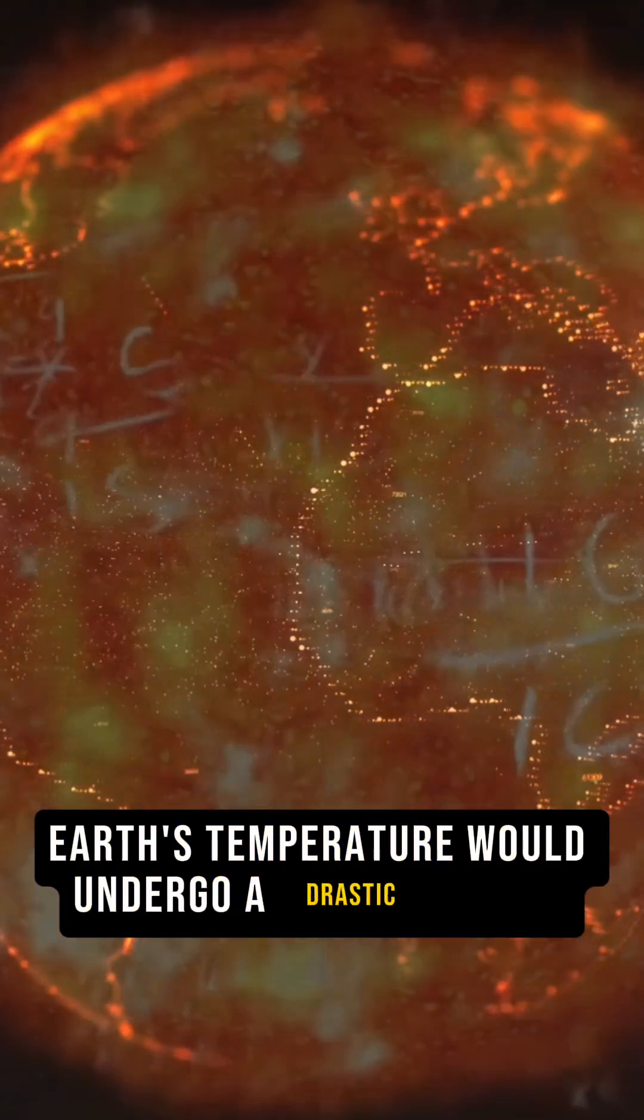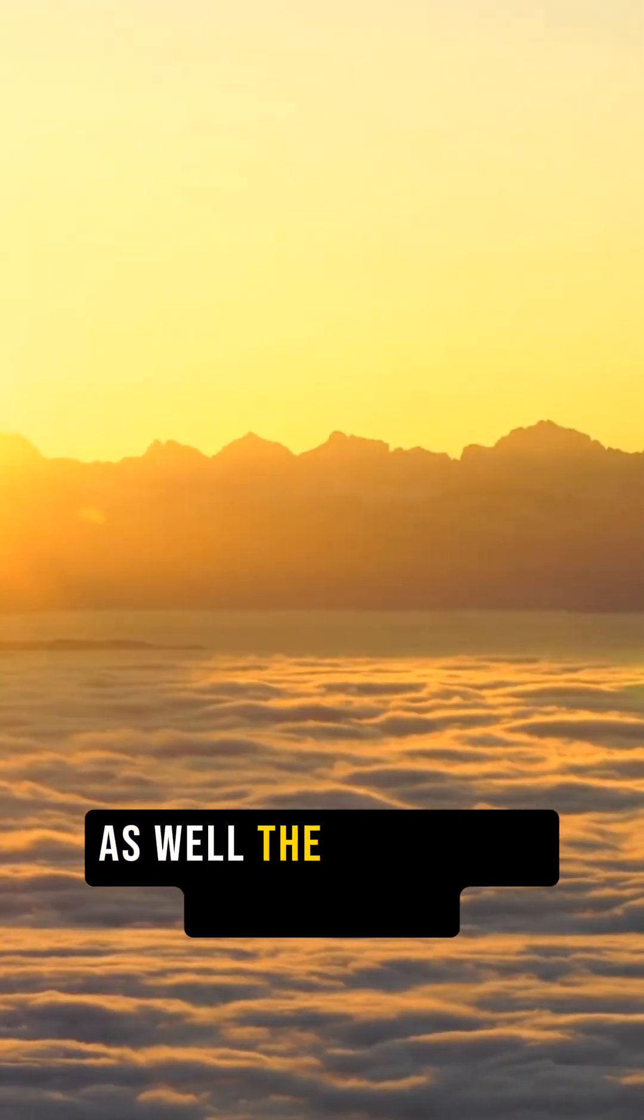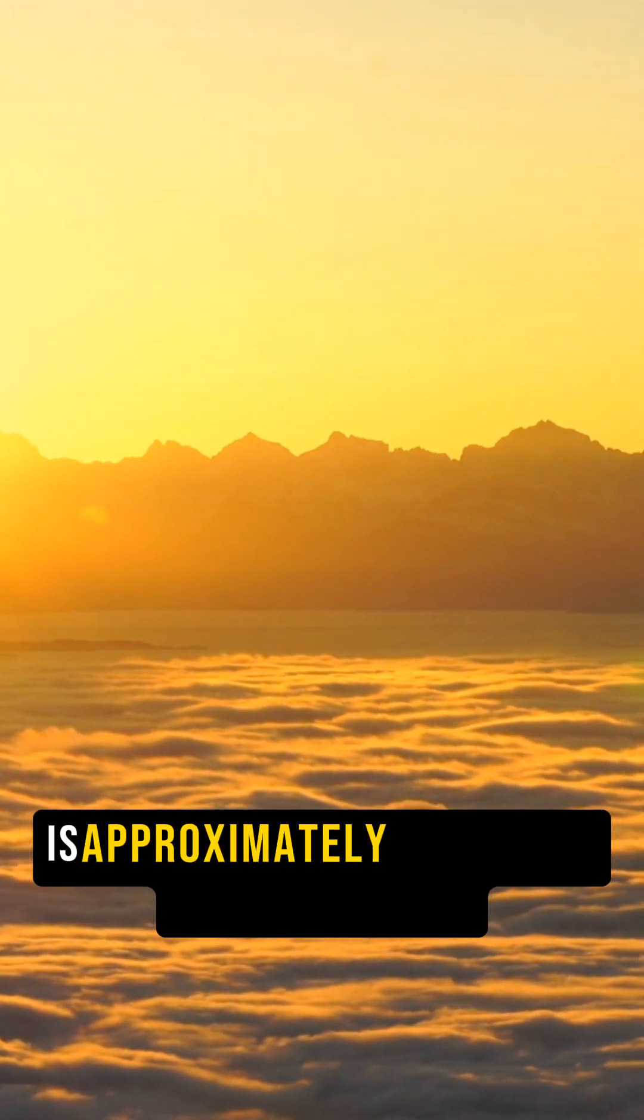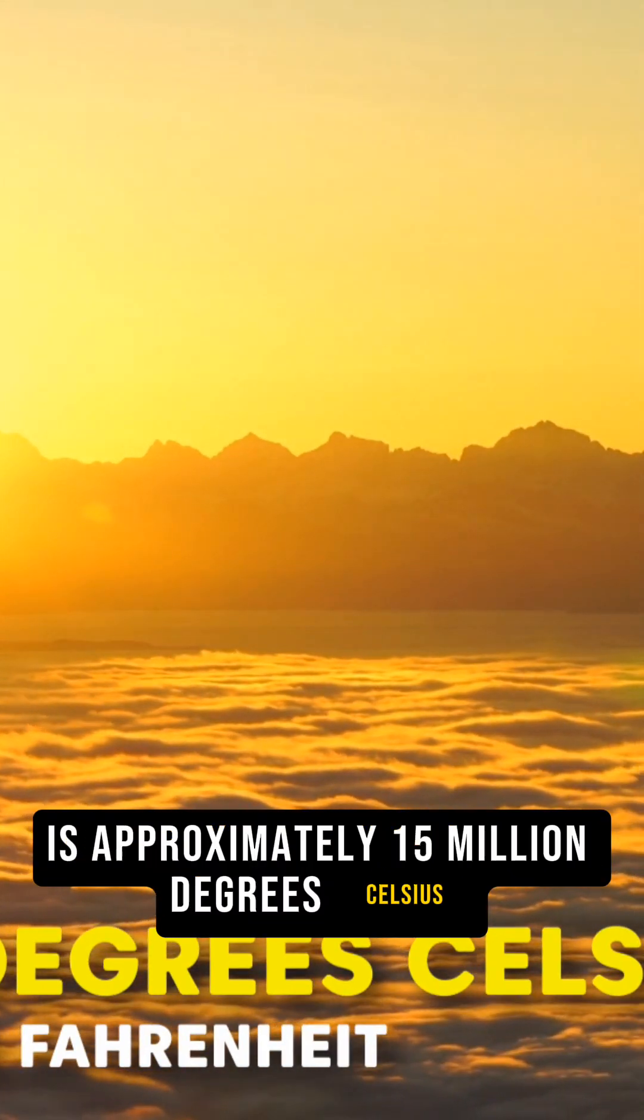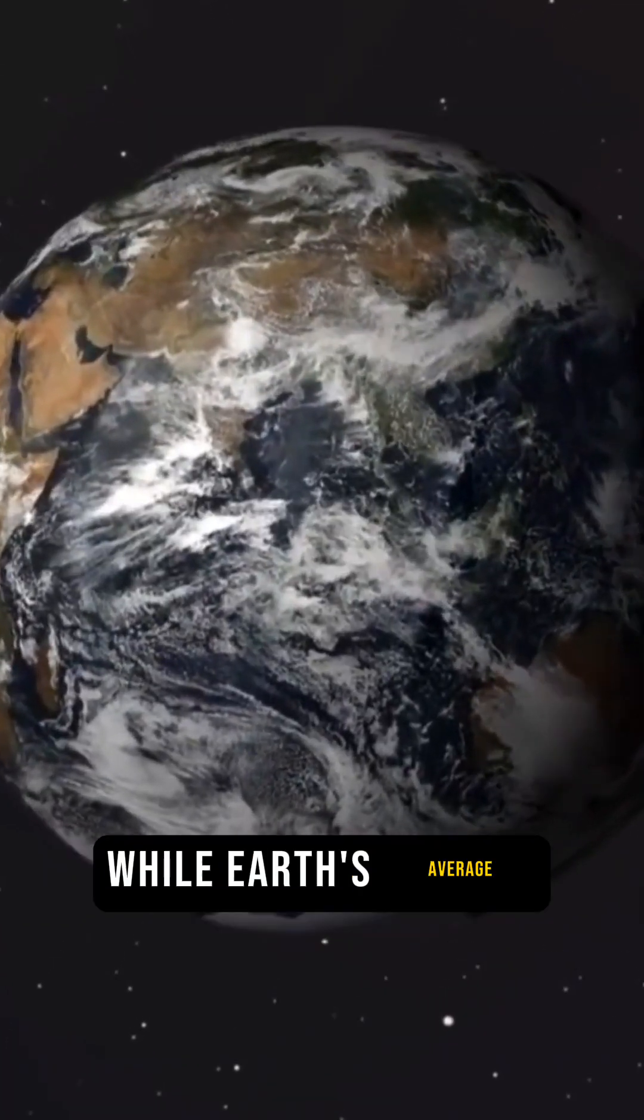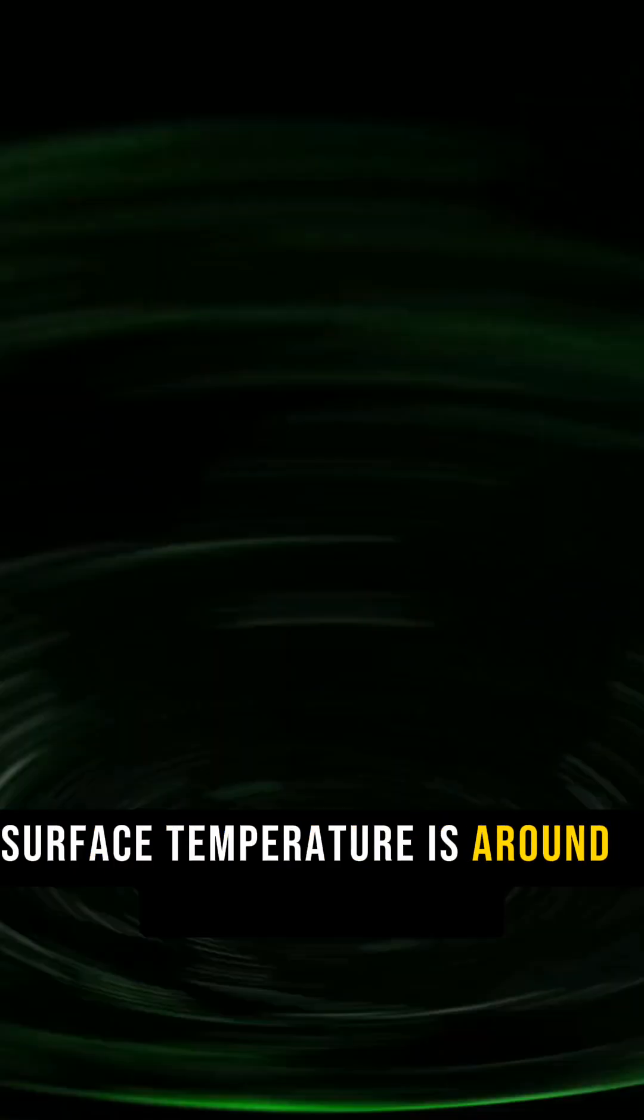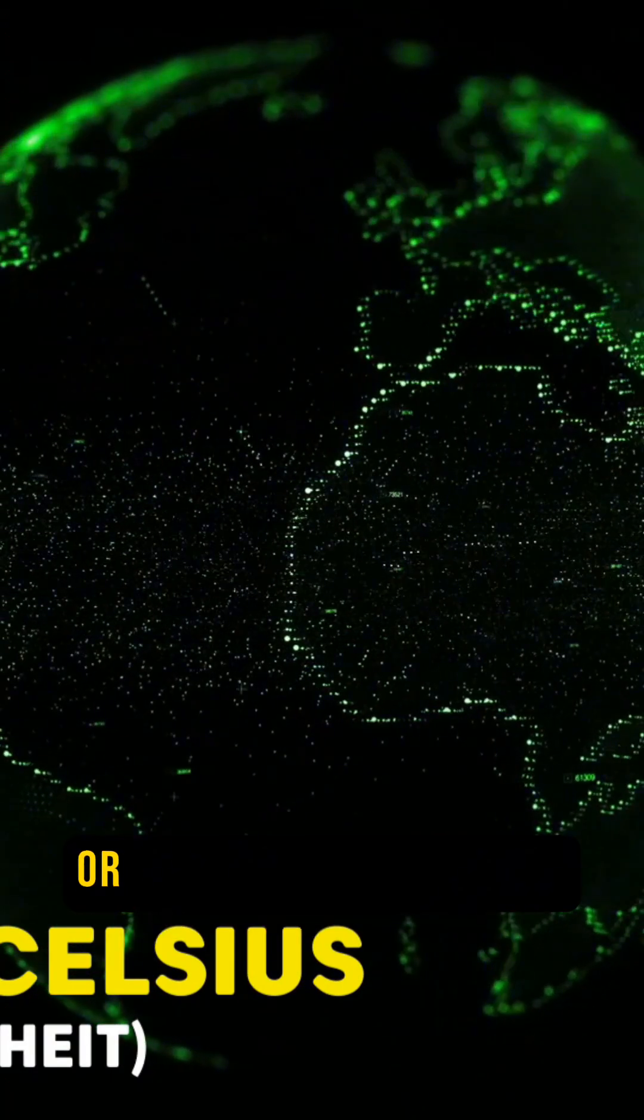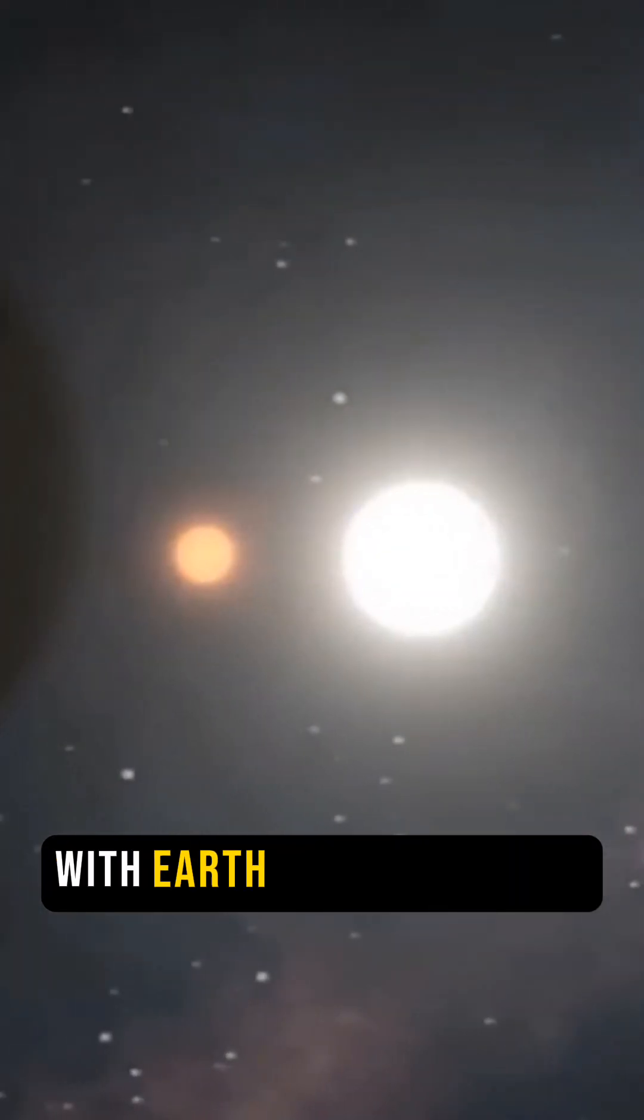Earth's temperature would undergo a drastic change as well. The sun's core temperature is approximately 15 million degrees Celsius or 27 million degrees Fahrenheit, while Earth's average surface temperature is around 15 degrees Celsius or 59 degrees Fahrenheit.